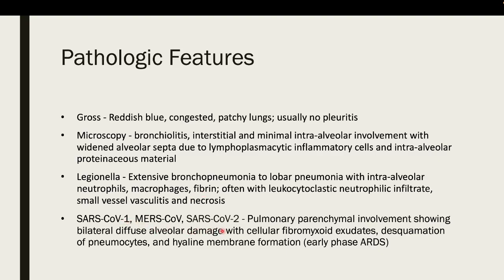For MERS-CoV, the pathologic features are poorly understood because in the Middle East, autopsies are not regularly performed for deceased patients. But for SARS-CoV-1 and COVID-19, there are many autopsy studies. During autopsy, microscopic examination of the lungs showed pulmonary parenchymal involvement with bilateral diffuse alveolar damage, cellular fibromyxoid exudate, desquamation of pneumocytes, and hyaline membrane formation — which is usually the early phase of ARDS.